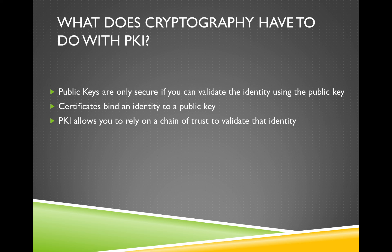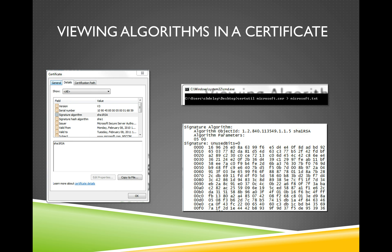In sections coming up later, which will be separate webcasts, we'll talk about how that validation is done and also how those trust relationships can be managed. You can also view the algorithms in a certificate. Here's a common one: we see SHA-1 and RSA — the SHA-1 hashing algorithm and RSA as the public key cryptography algorithm being used. You can also see the signature in a certificate, for example if you run certutil against a certificate. In this example, I used the certificate from Microsoft.com.